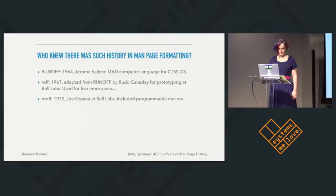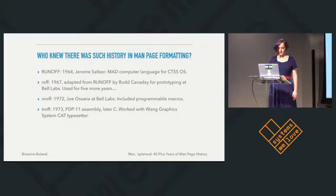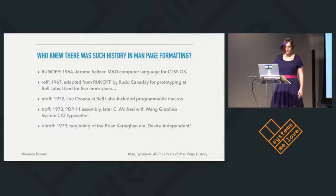The next version was N-Roff, for New Roff, and that was written by Joe Ossanna also at Bell Labs. That was the first version that included programmable macros. 1973 brought T-Roff, originally in PDP-11 assembly, later in C. This was also Joe Ossanna's work, and this one stuck around longer than he intended because he died fairly early and wasn't able to finish the work he intended to complete.